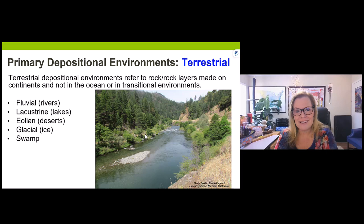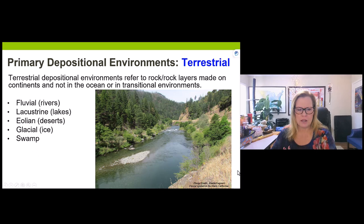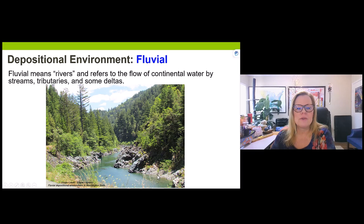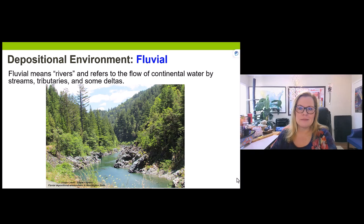Let's go through each terrestrial environment. Fluvial means rivers. Rivers are very diverse — some have roaring rapids, some move very slowly. Rivers are where water moves over the continent via streams, tributaries, and deltaic deposits. From this day forward you'll call them fluvial depositional environments.